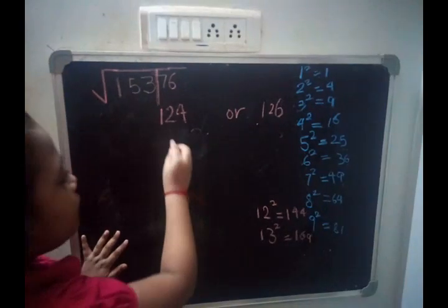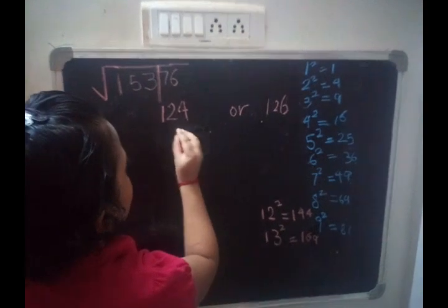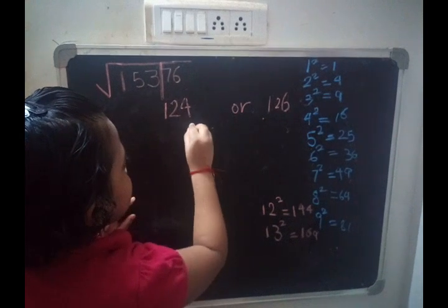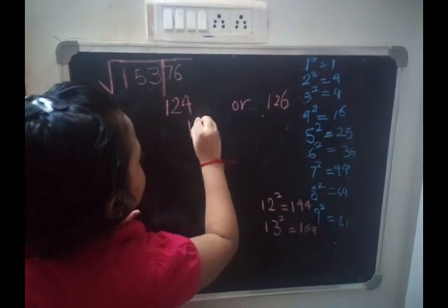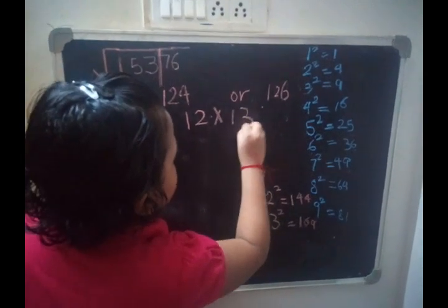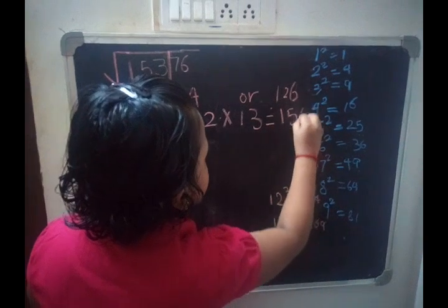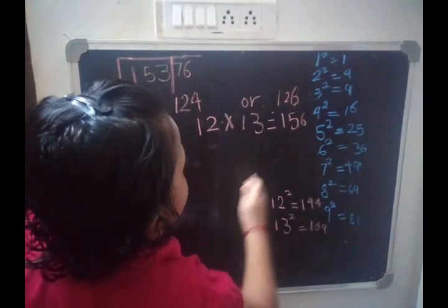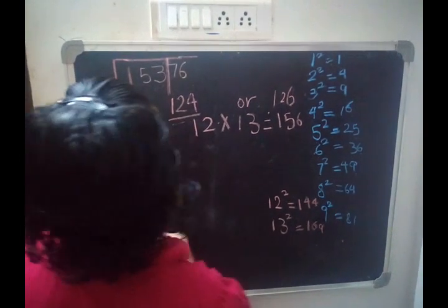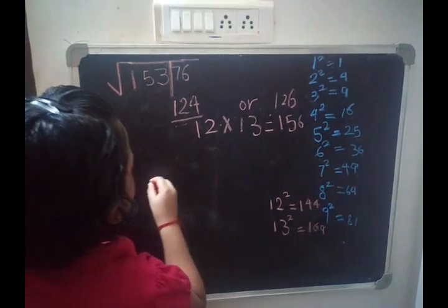Now, to choose the correct answer from these two options: we leave the unit space and the remaining digit is 12, so we do 12 into its next number 13: 12 × 13 = 156. Since 153 is less than 156, we take the smaller option: 124. The square root of 15376 is 124.